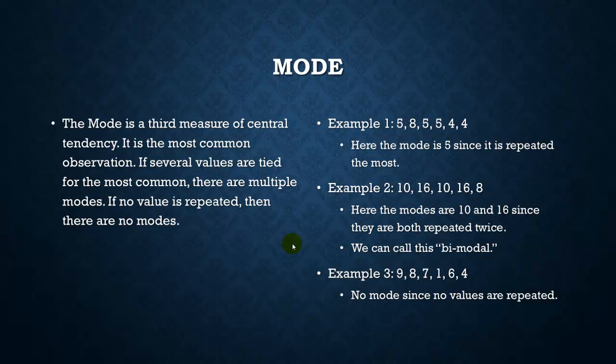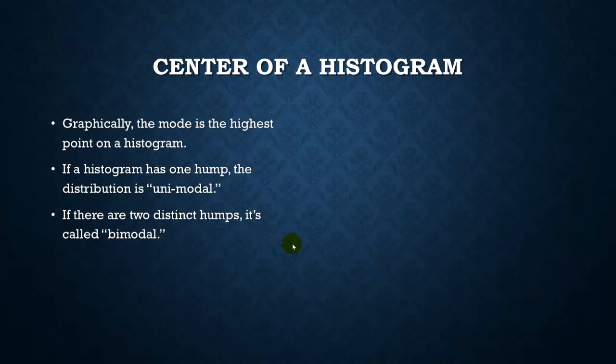Another way we use modes is to look at a histogram. So graphically on a histogram, the mode is going to be the highest point. If there is only one hump, it is said to be unimodal. And if there are two distinct humps, it is called bimodal. So here is an example of a unimodal distribution where there is one hump, and the mode is right at the top here, or the highest point here, and it is whatever this value is for x.